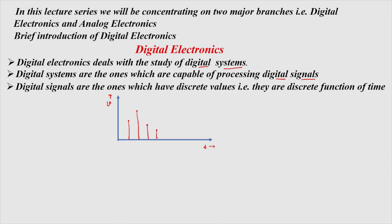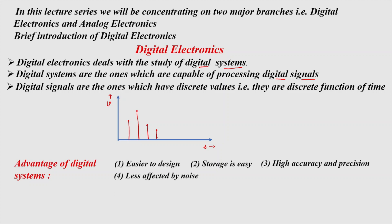Now what are the advantages of Digital Systems? There are many advantages: they are easier to design, storage is easy, high accuracy and precision, less affected by noise and external disturbances, and fabrication of Digital ICs is simple and more economical as compared to Analog ICs.